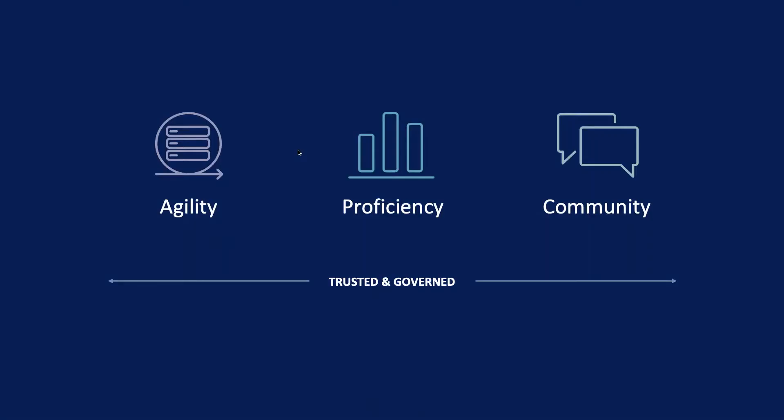The Blueprint exists out of three main parts. The first part is agility. At a high level, agility is all about your Tableau Server or your infrastructure — making sure everything is set up correctly for potential growth or a potential spike in usage.